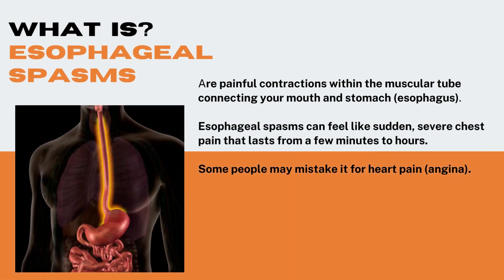Esophageal spasms are painful contractions within the muscular tube connecting your mouth and stomach — the esophagus. Esophageal spasms can feel like sudden, severe chest pain that lasts from a few minutes to hours. Some people may mistake it for heart pain, or angina.